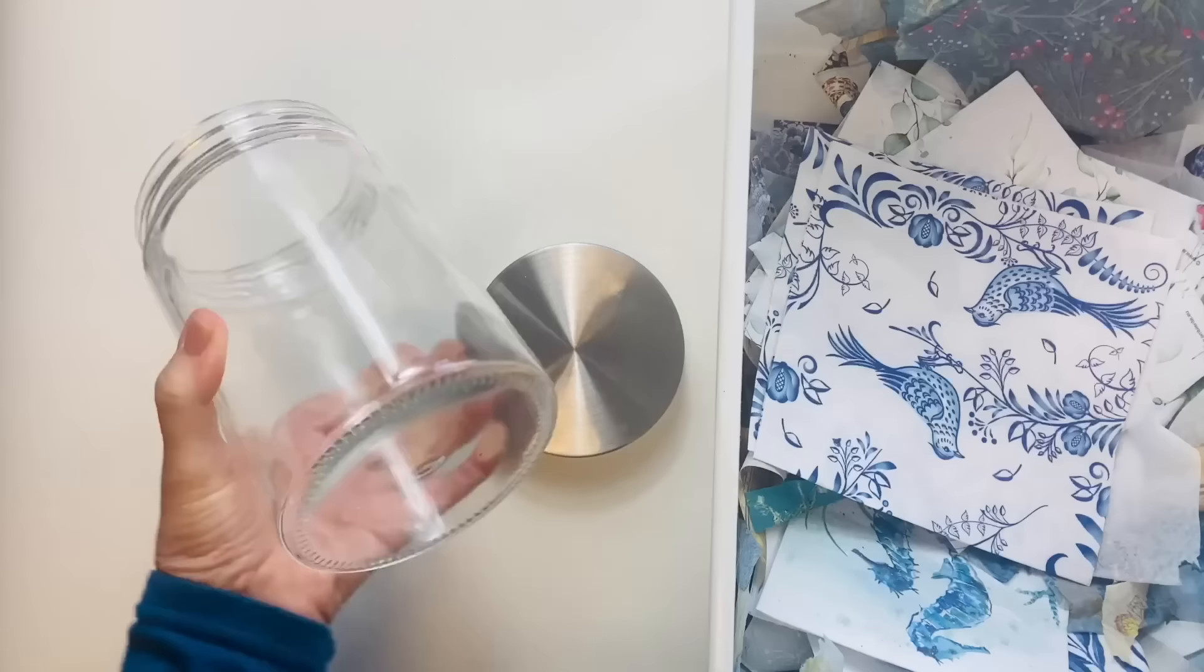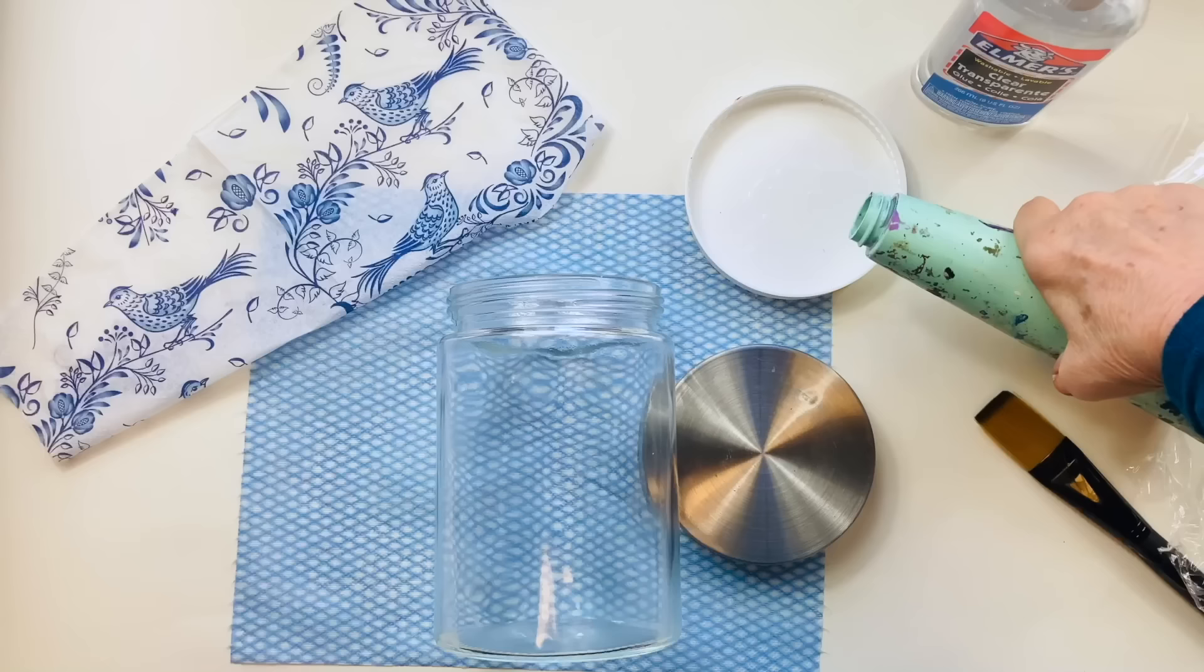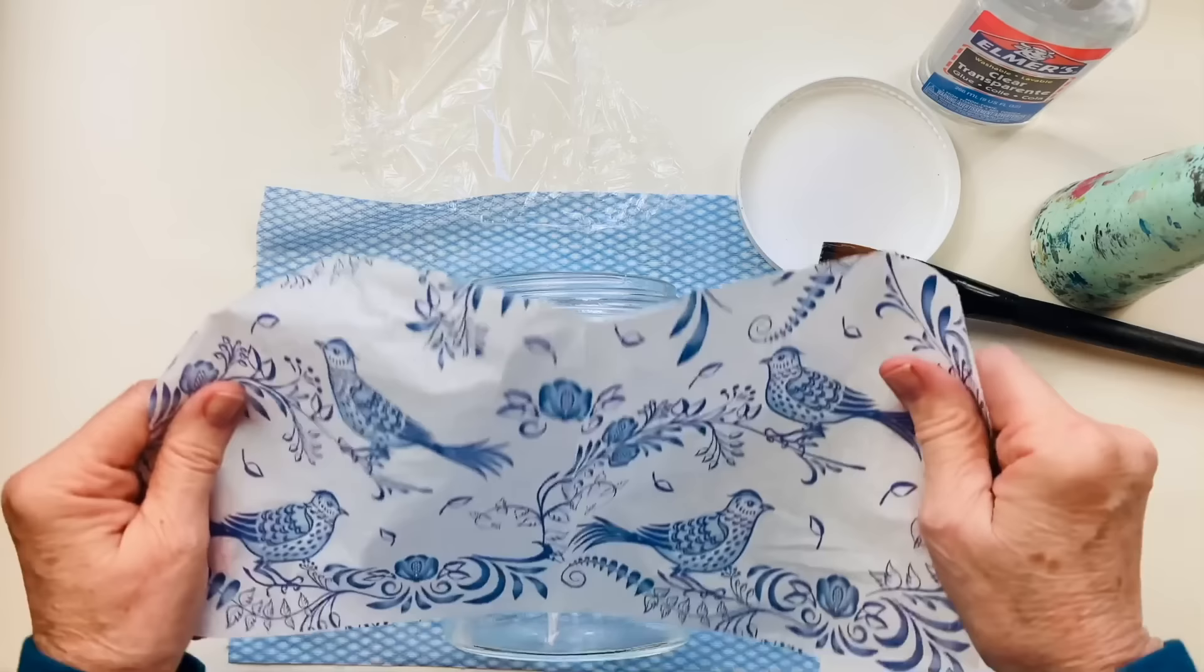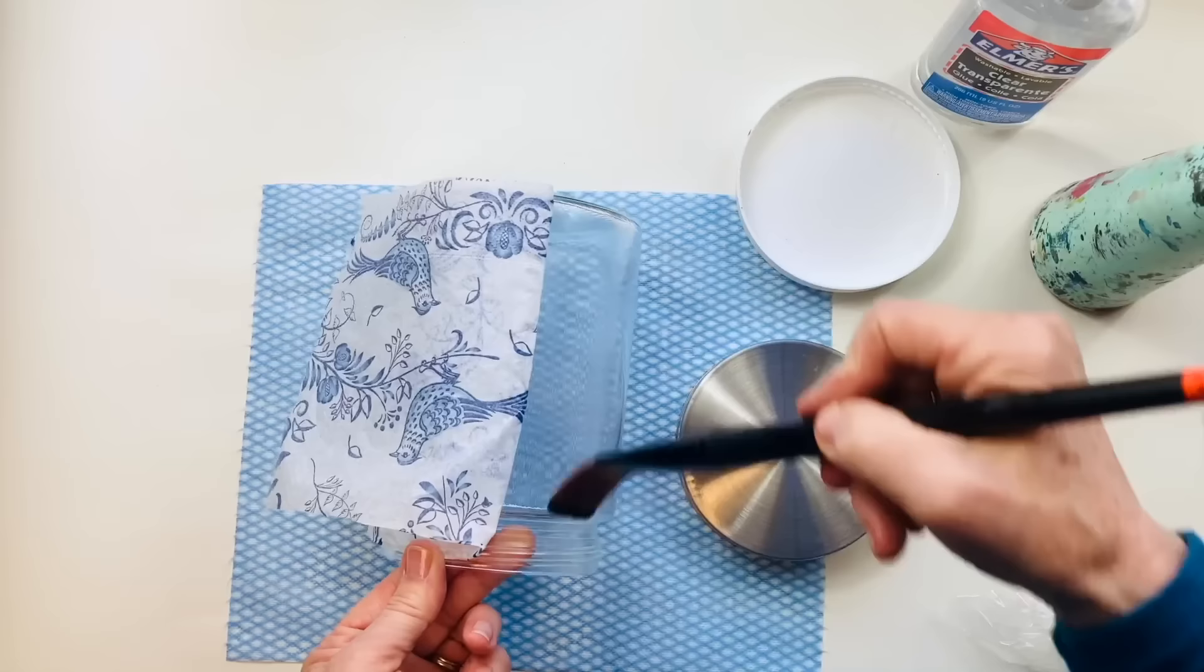Separate the layers and cut the napkin so that you have enough to cover the body of the jar. Now I'm using some clear glue mixed with a tiny amount of water, painted onto the side of the glass jar. Then lay down the paper napkin, and then using a piece of scrunched up plastic wrap, use that to pat down the napkin and eliminate any wrinkles.